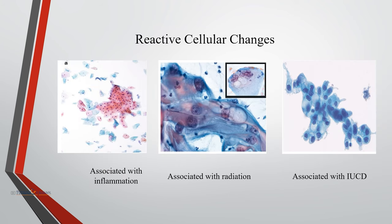Reactive cellular changes associated with radiation show an increase in cell size without increase in nuclear-to-cytoplasmic ratio. Bizarre cell shapes, possible binucleation, and multinucleation are usually present, and cytoplasmic vacuolization can also be seen. In reactive changes associated with IUCD, the reactive cell changes may be of endometrial or endocervical origin, and the amount of cytoplasm usually varies.